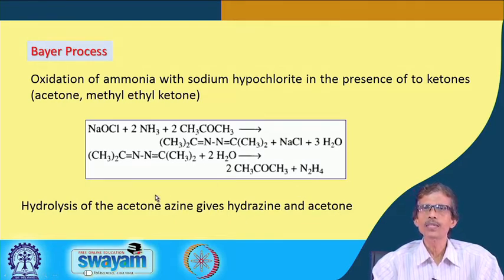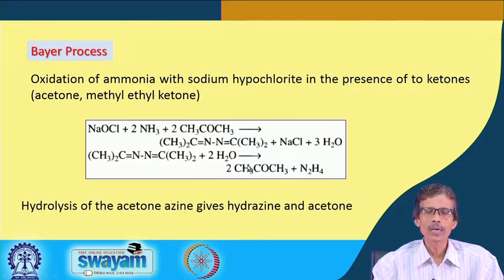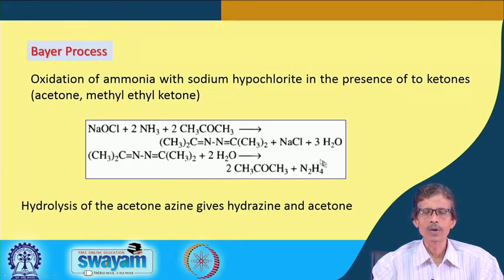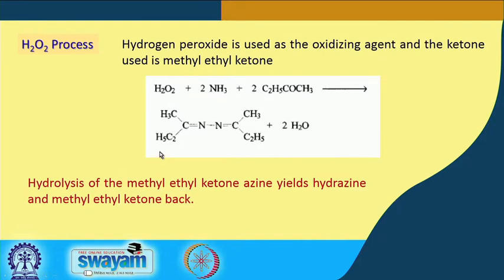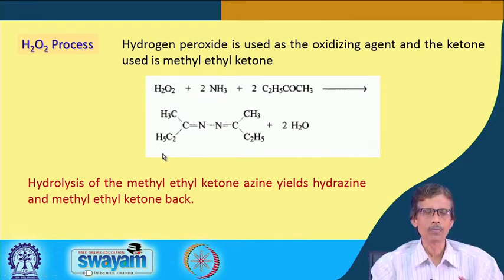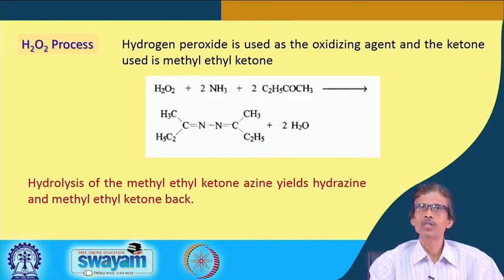The formed hydrazine is trapped by acetone as the intermediate di-azine, which purifies it from contamination of NaCl or other starting materials. Hydrolysis of the di-azine intermediate gives hydrazine N₂H₄ and acetone back. Lastly, we can consider whether hydrogen peroxide — instead of hypochlorite or direct chlorine — can be utilized as the oxidizing agent, along with methyl ethyl ketone.